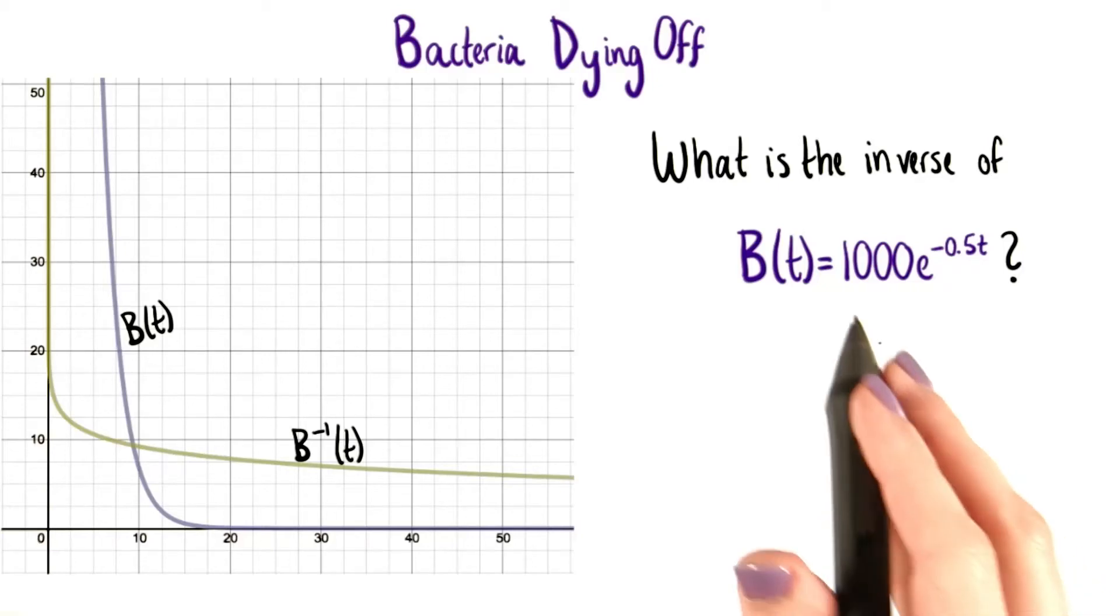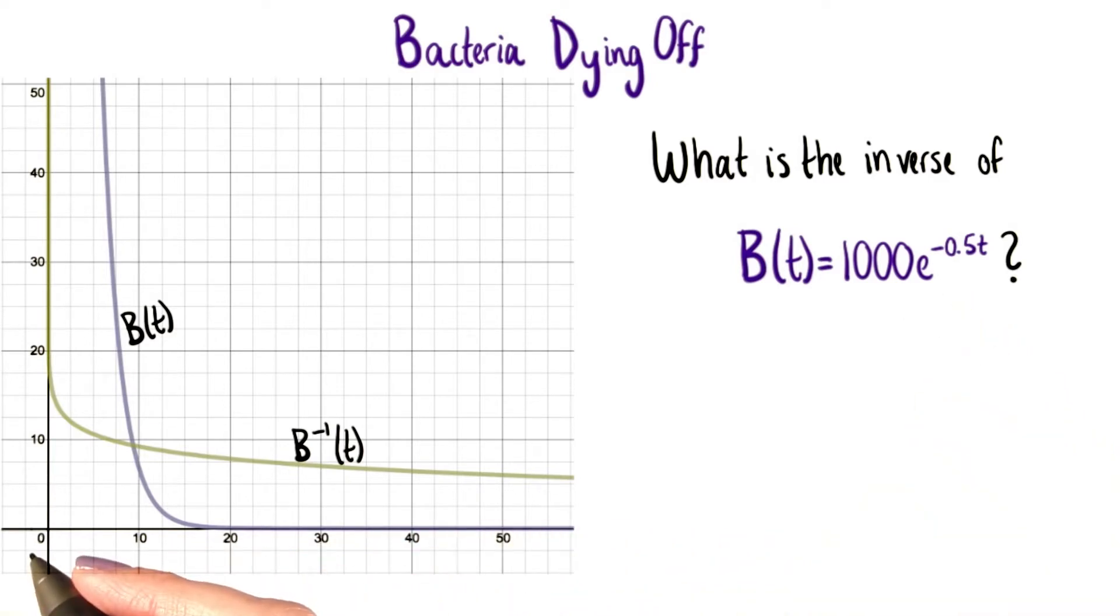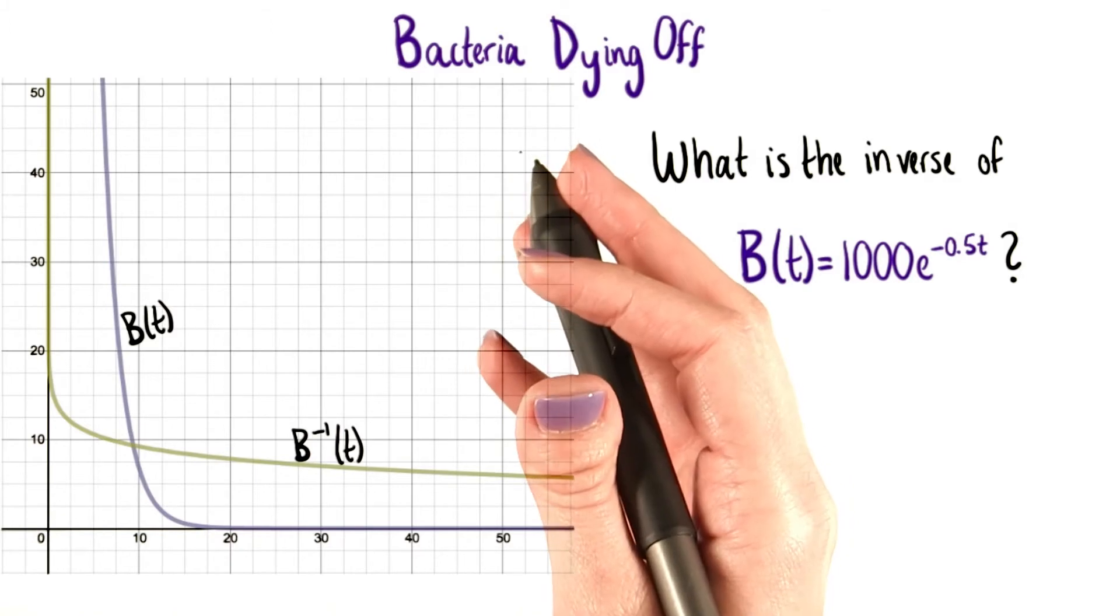We want to find the inverse of B(t) = 1000e^(-0.5t), which is the reflection of that graph in the line y = x.